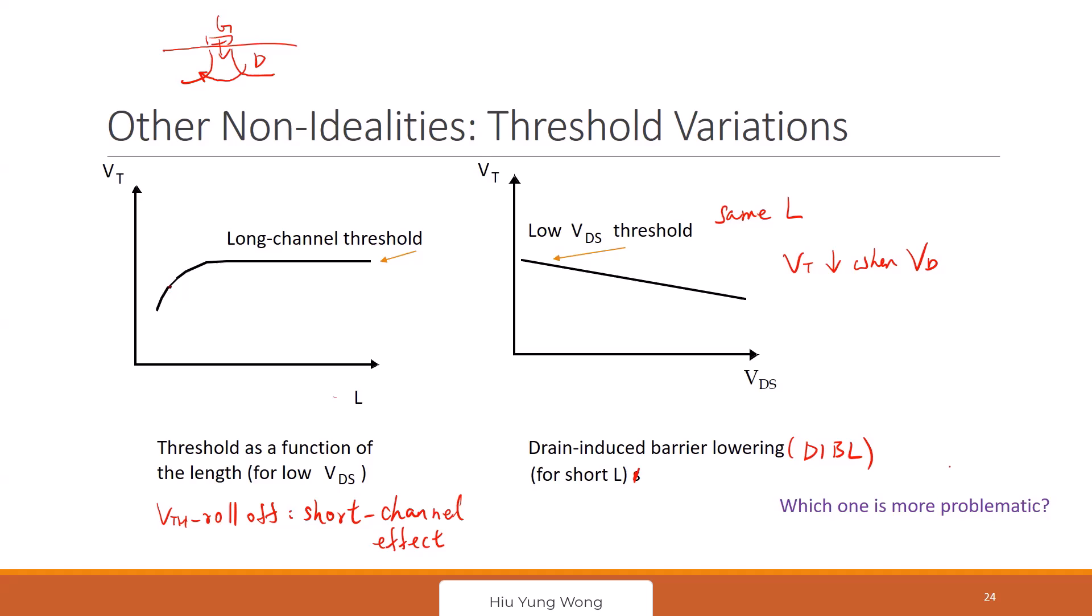Okay. So for a circuit designer, right? For a circuit designer, the biggest problem is the DIBL because it's voltage dependent. Right? If you already know that the voltage is going to be low for a certain gate length, then you just plan for that. You design your circuit so that you take this low voltage.